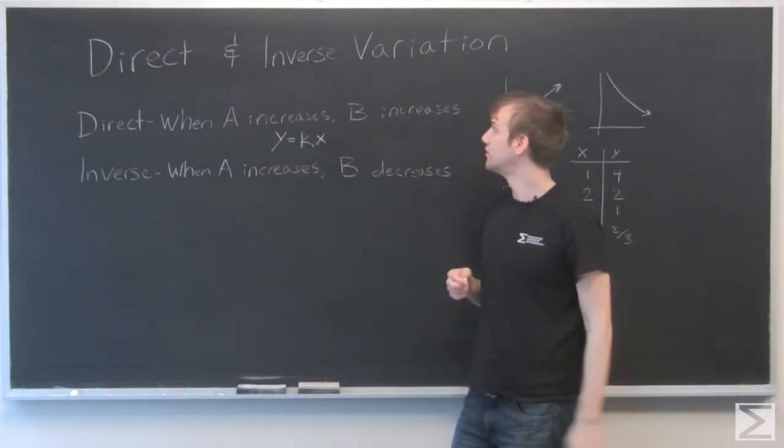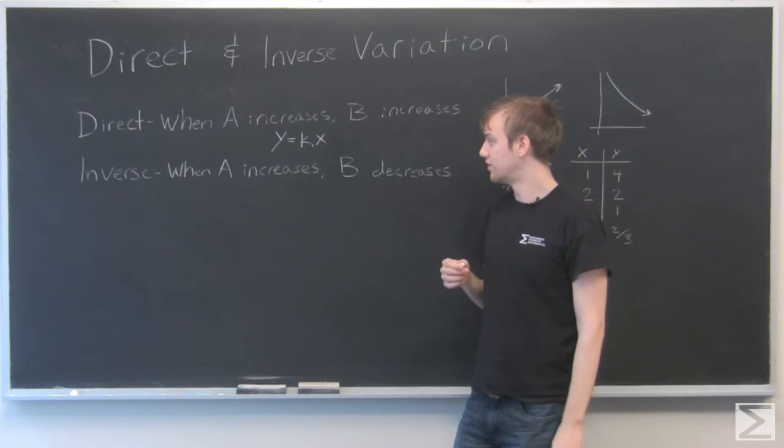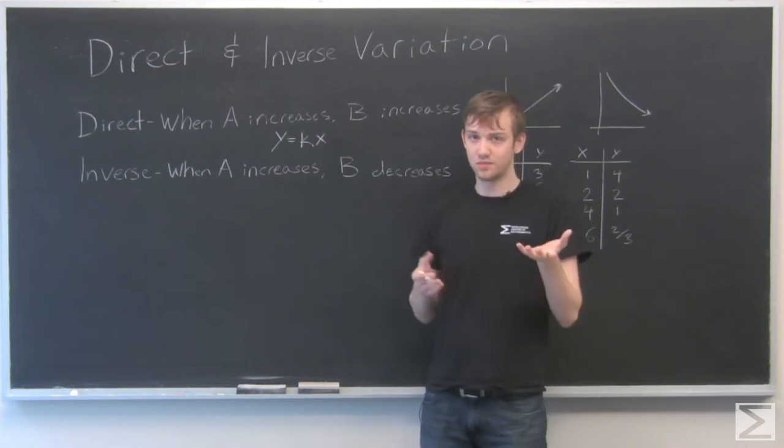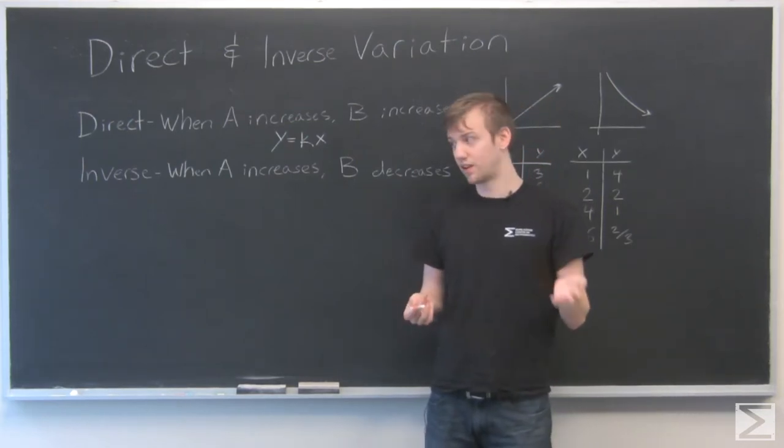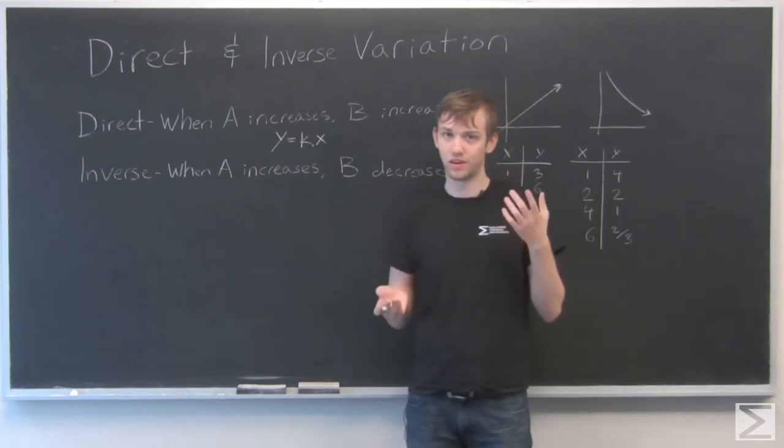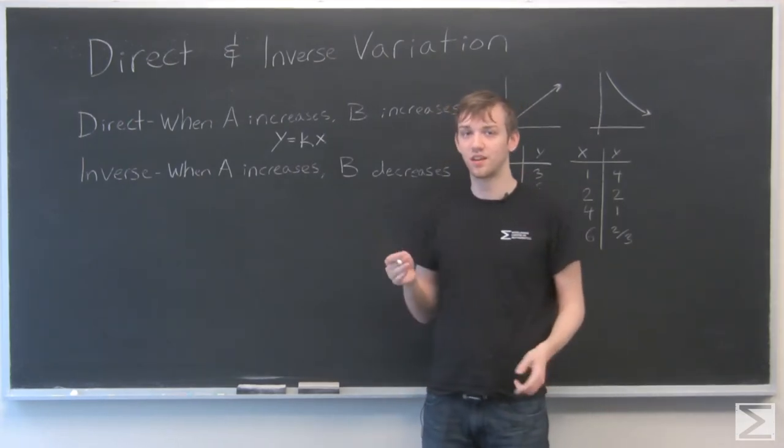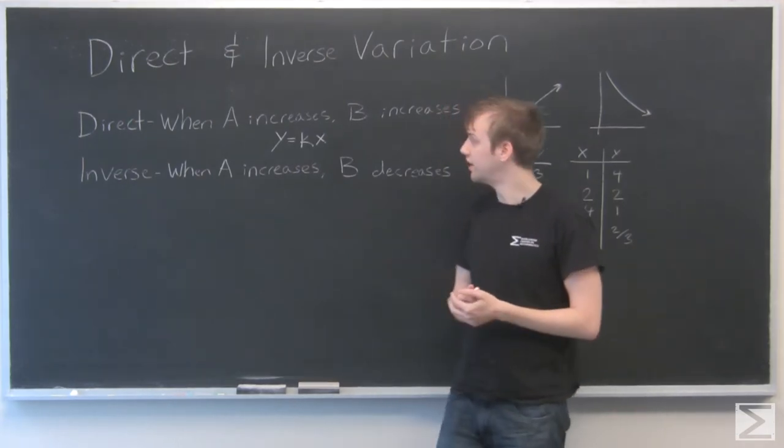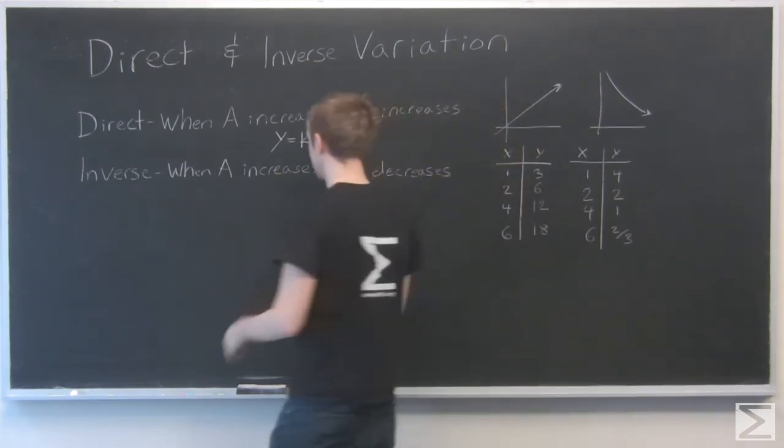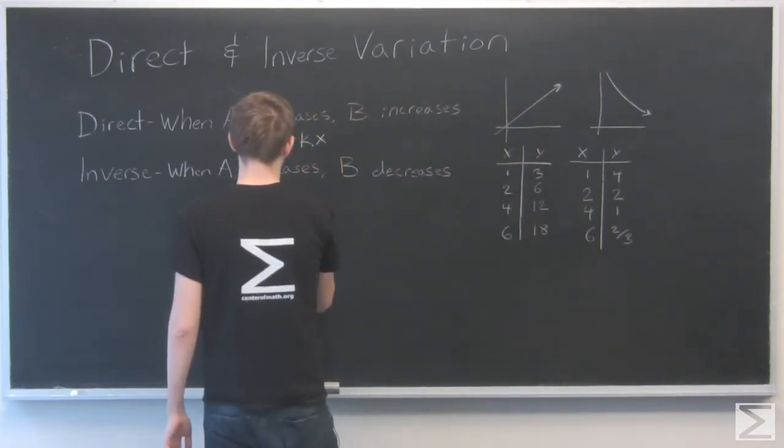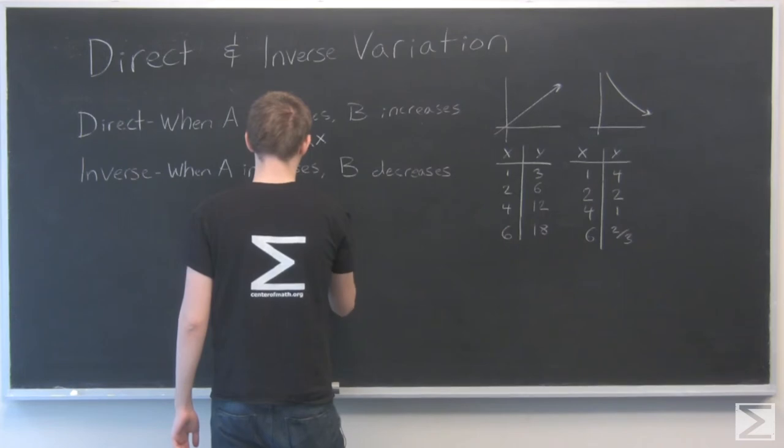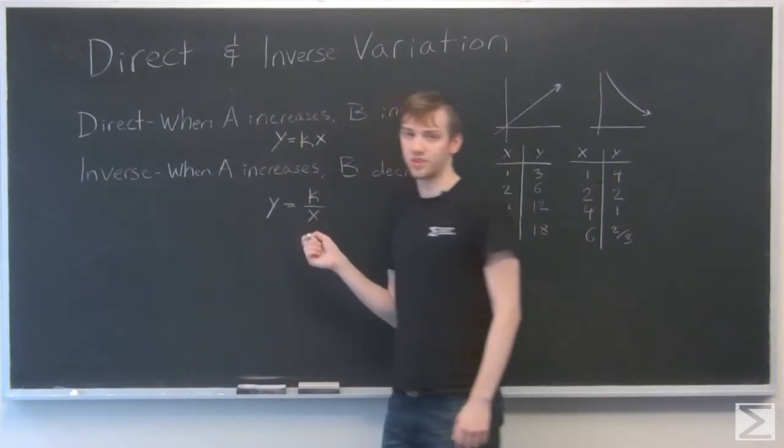The other form, inverse variation. Inverse is when A is increasing, B is decreasing. And along the same lines, when A is decreasing, B is increasing. Basically, they're going opposite each other. And the formula that they want you to use for this is Y equals K over X.